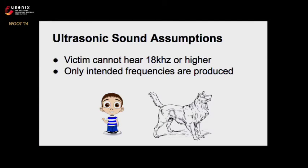We made a few assumptions when we say that our transmissions are not detectable. One problem we encountered is that children and animals can hear these ultrasonic signals. Usually they're not the victims we're interested in, but if you want a more comprehensive attack, you'd need frequencies higher than 18 or even 20 kilohertz. Secondly, we assume that only the frequencies you want are being produced. Some speakers have trouble producing high-frequency sounds and can either produce barely any noise or a slight audible hum of unwanted frequencies — this is especially a problem when bit rate and amplitude become very high.